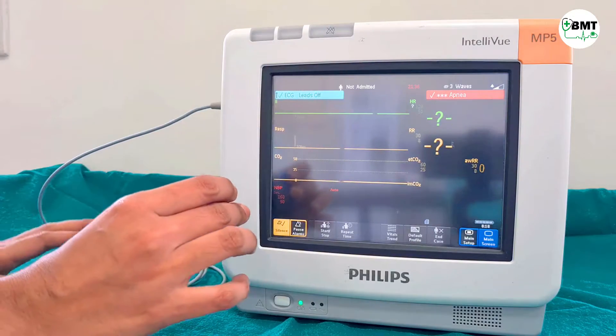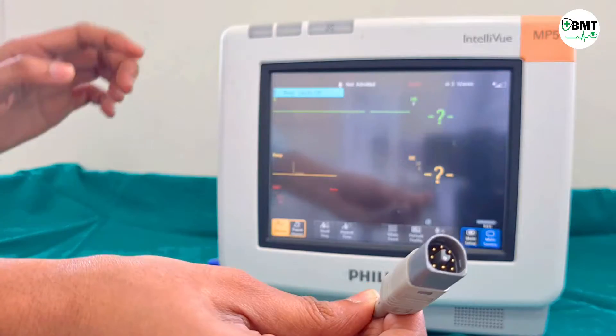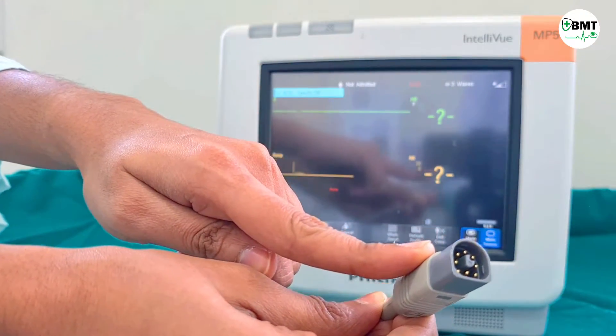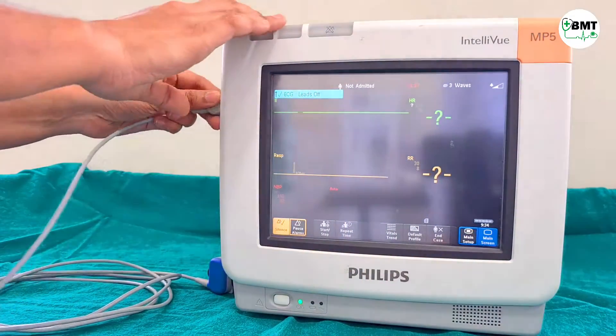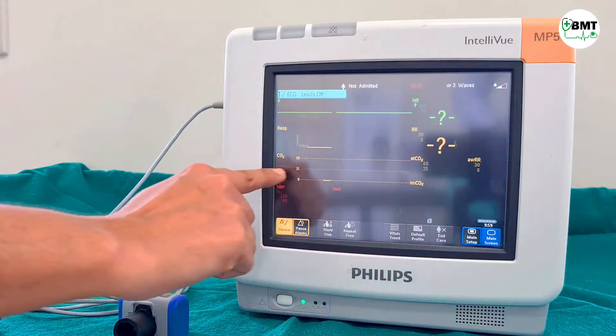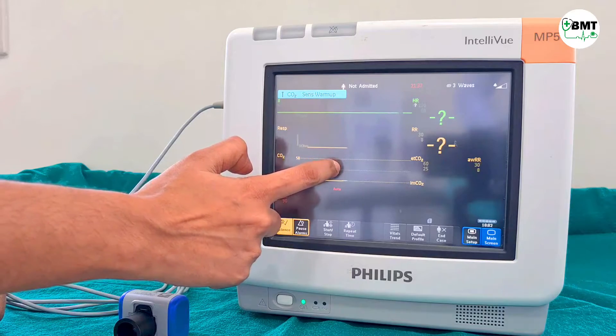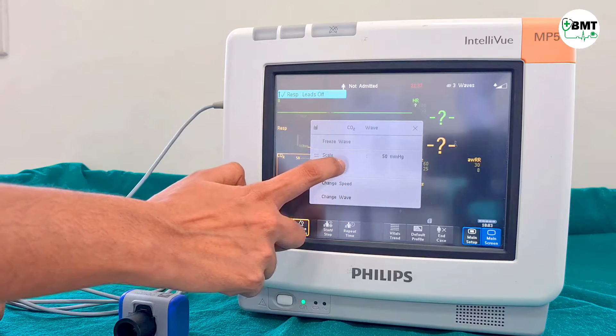Let us learn how ETCO2 zero calibration is done. First, connect this connector and match this slot with the CO2 slot of the monitor. CO2 will come over here. Go to setup CO2.